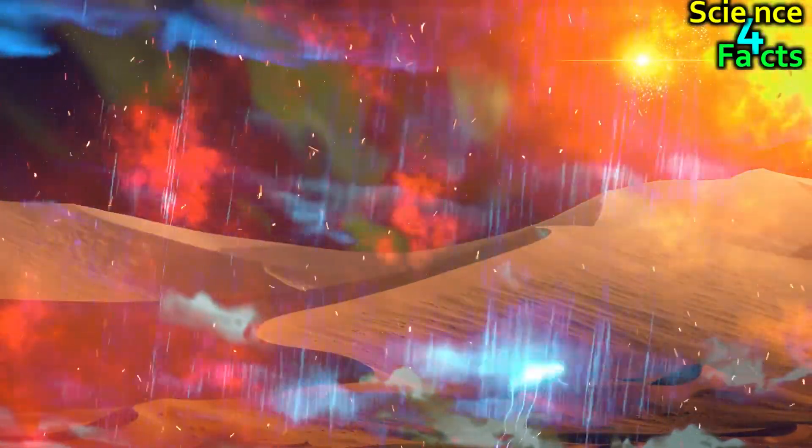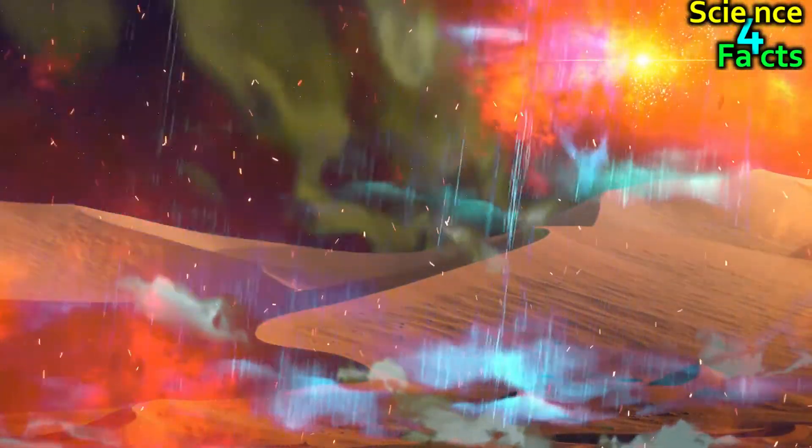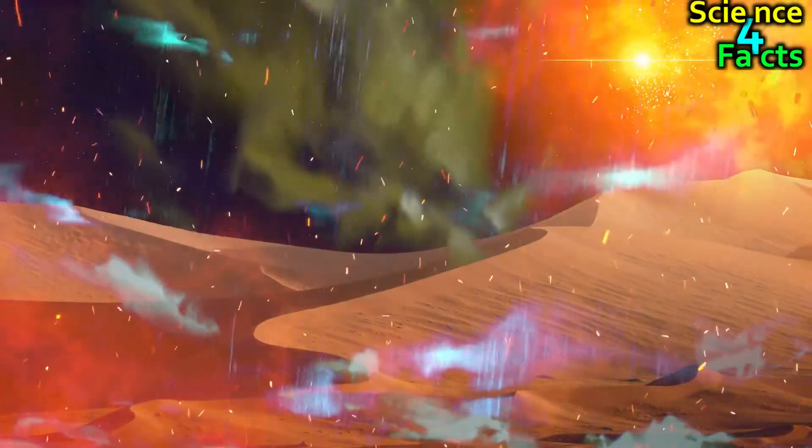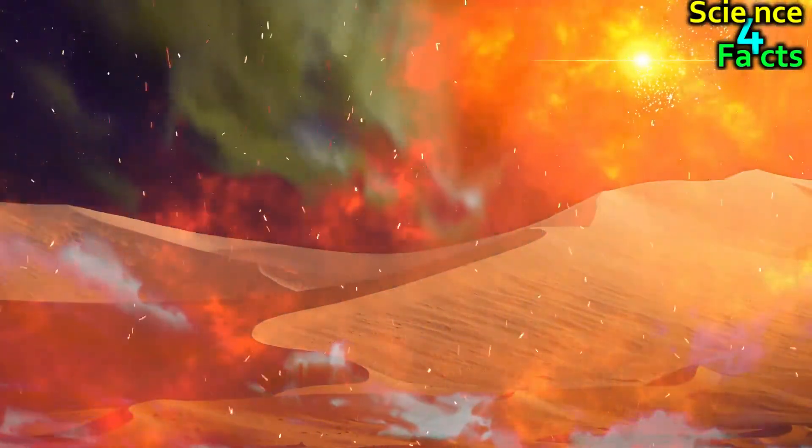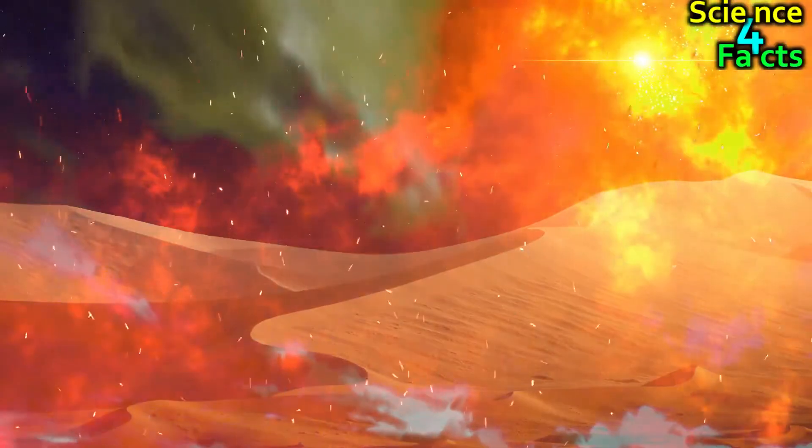Light bounces easily off the smooth surfaces of these spheres and crystals. Sunlight bouncing from these clouds is a big part of the reason that Venus is so bright.